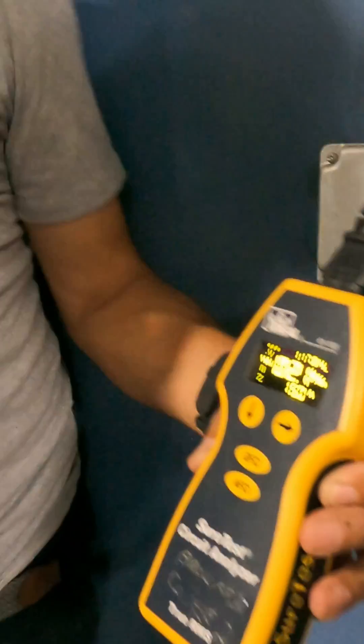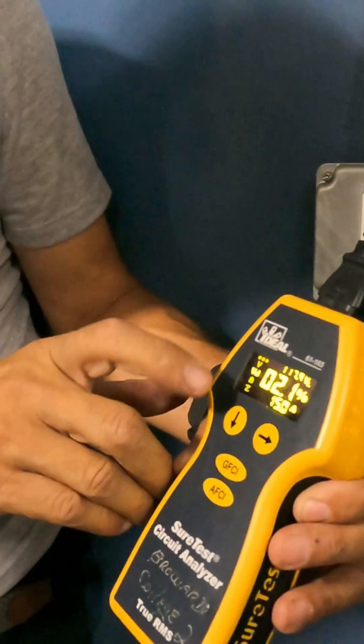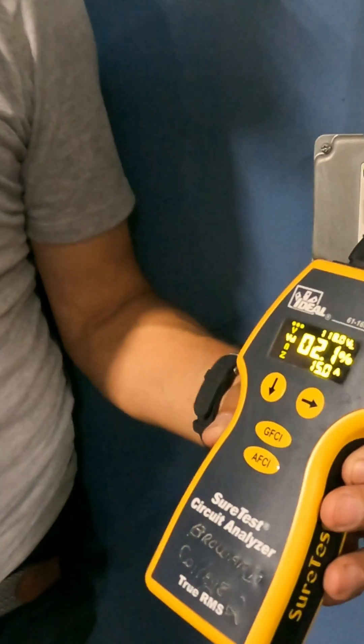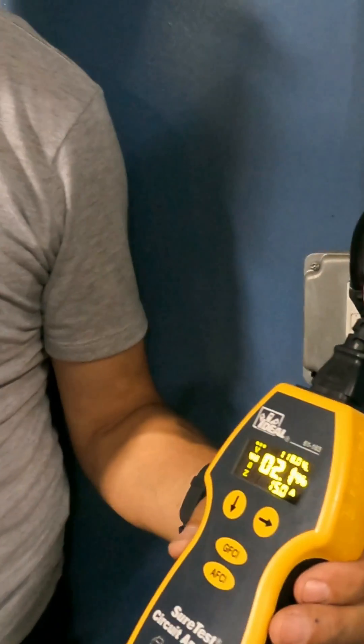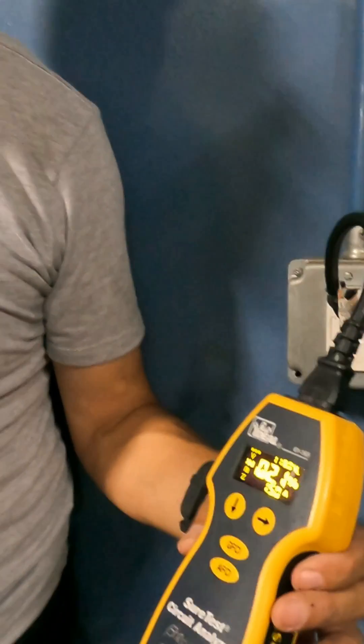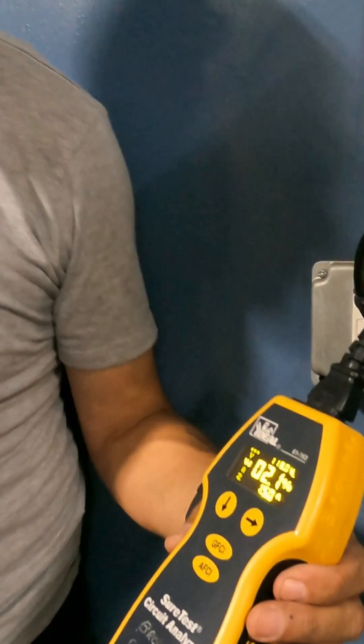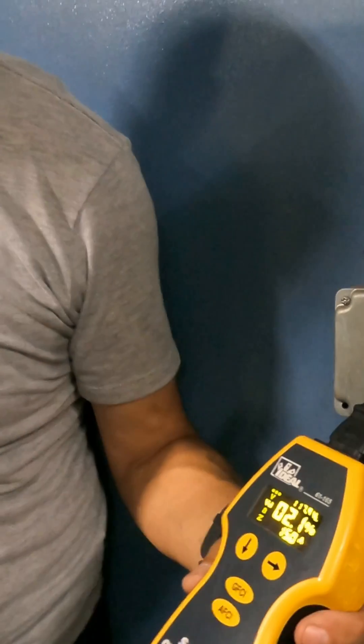I am going to check voltage drop. The voltage drop is 2.1 percent. What is the maximum voltage drop allowed? Ten percent for lighting and three percent. It's 2.1 percent - it's okay, that's a good voltage drop.